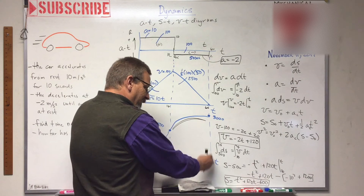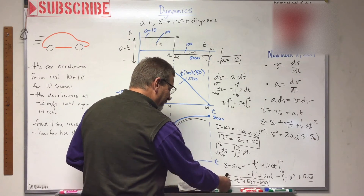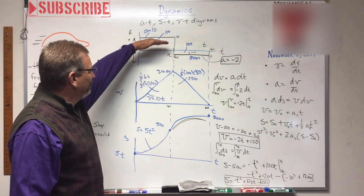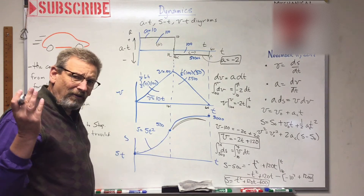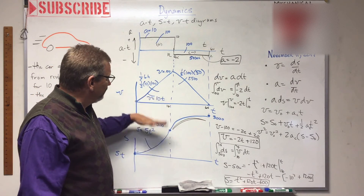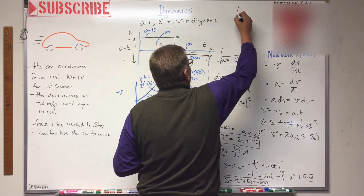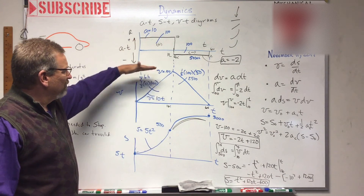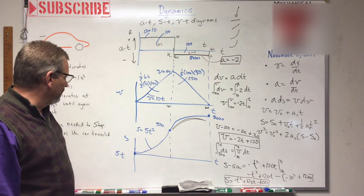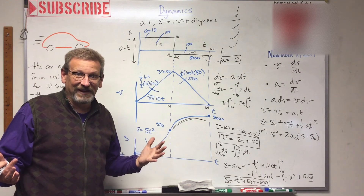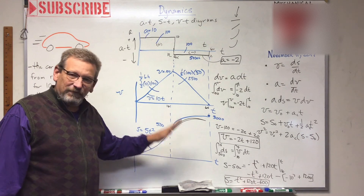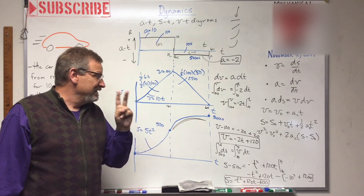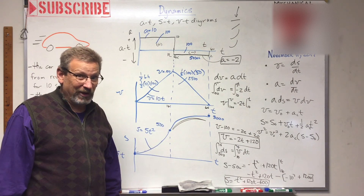So you understand that each diagram is the integral of the one above it, and we can use the techniques we already knew from shear-moment diagrams. Remember the order of the lines: flat, then linear, then parabolic, then cubic, as you go down. I hope that's not too confusing. If you haven't already, go back and review shear-moment diagrams in both the statics and dynamics videos — that will really help solidify this.